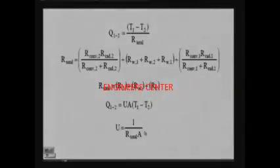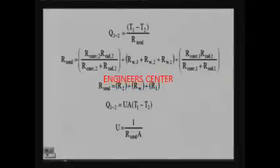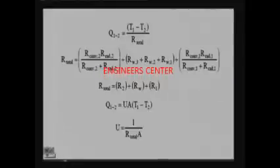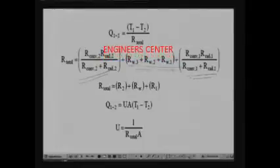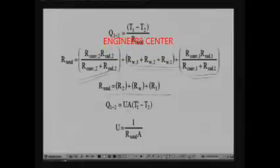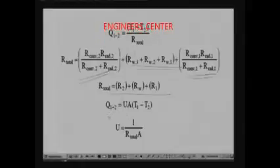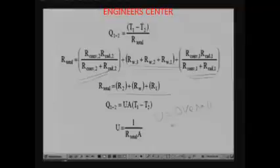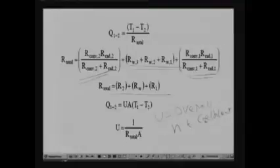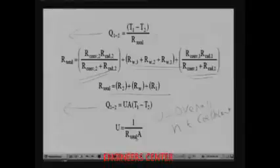You can write for this multilayered wall Q_1to2, that means from room 1 to room 2, as T1 minus T2 divided by R_total, where R_total consists of these resistances. This is the equivalent resistance of the two parallel radiative and convective resistances in parallel for room 2, and this is for room 1, and these are the resistances in series for the wall. You can also write the heat transfer rate in terms of what is known as the overall heat transfer coefficient, writing Q_1to2 as U times A times (T1 minus T2), where U is the overall heat transfer coefficient.